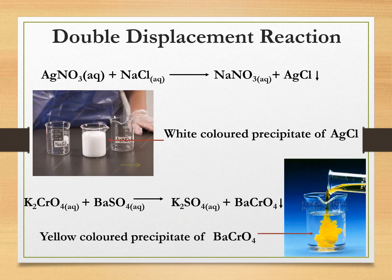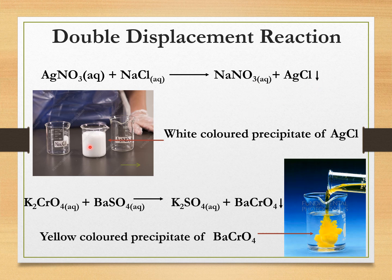Now, the fourth type: double displacement reaction. Let us look at two examples. Silver nitrate solution is added to NaCl, that is sodium chloride solution. What we get is sodium nitrate plus a white precipitate of AgCl, that is silver chloride. You can see the downward arrow indicating precipitate — this is the white colored precipitate of silver chloride.